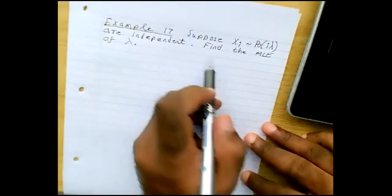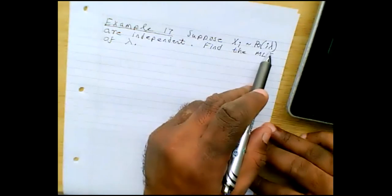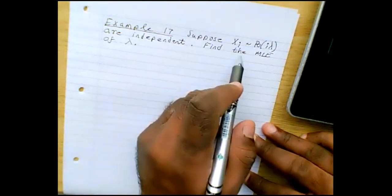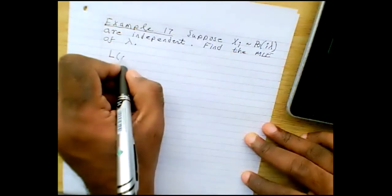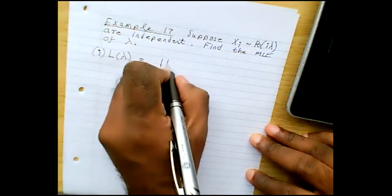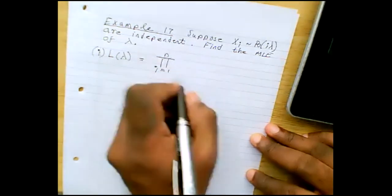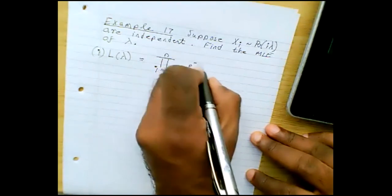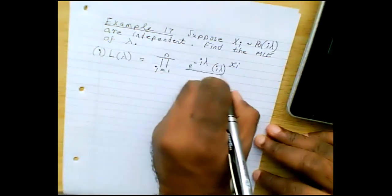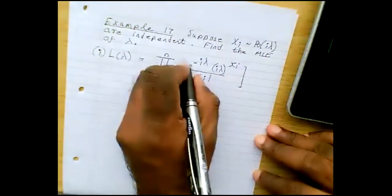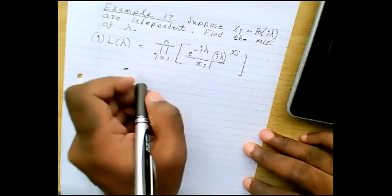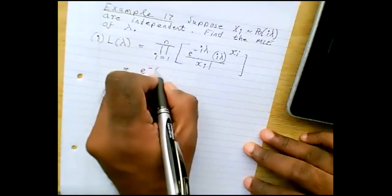Example 17: xi are Poisson distributed with parameter i*lambda — so they are independent but not identically distributed. This is an example where the data are independent but not identical. The PMF of Poisson is e to the minus lambda (here i*lambda) times lambda to the power xi divided by xi factorial. You simplify this using the rules from the preliminary section — the product of the density across all observations.